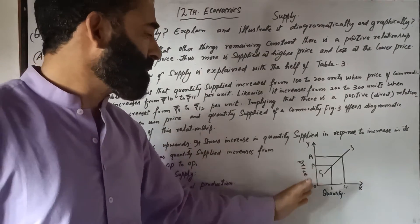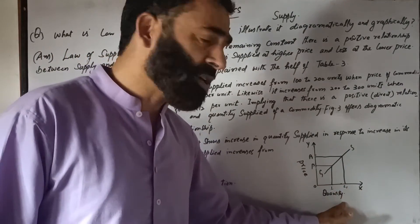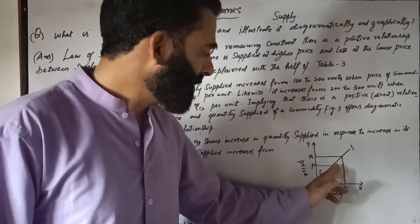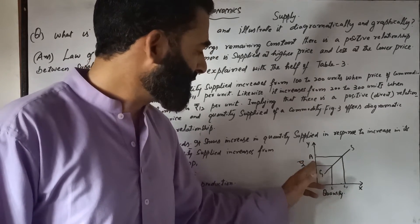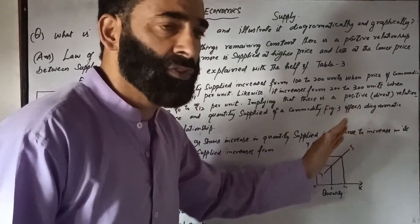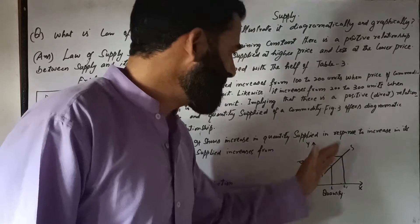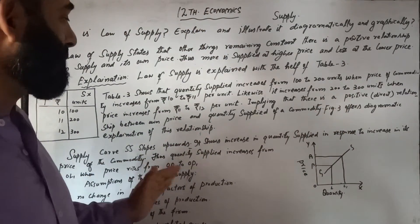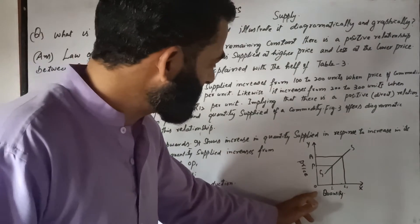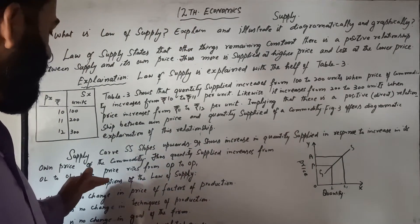Here we see the supply curve. Looking at the supply curve, we see the quantity of a commodity on the horizontal axis. If the price was P, then the supply was OL. The supply curve has an upward slope, showing an increase in quantity supplied. Quantity supplied increases in response to an increase in the price of the commodity. When price increases from P to P1, then supply increases from OL to OL1.